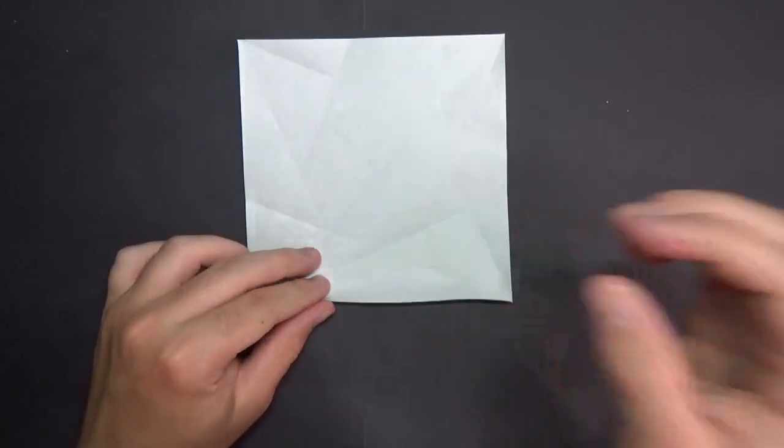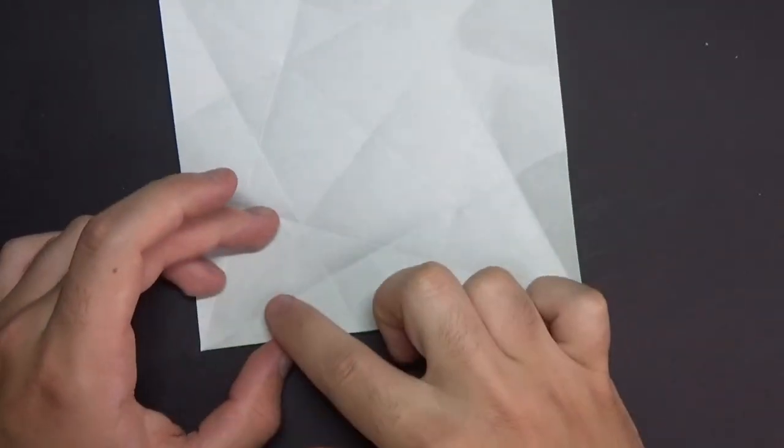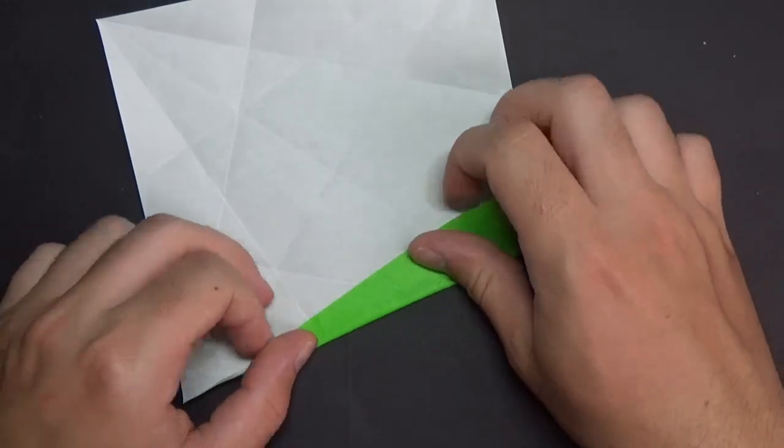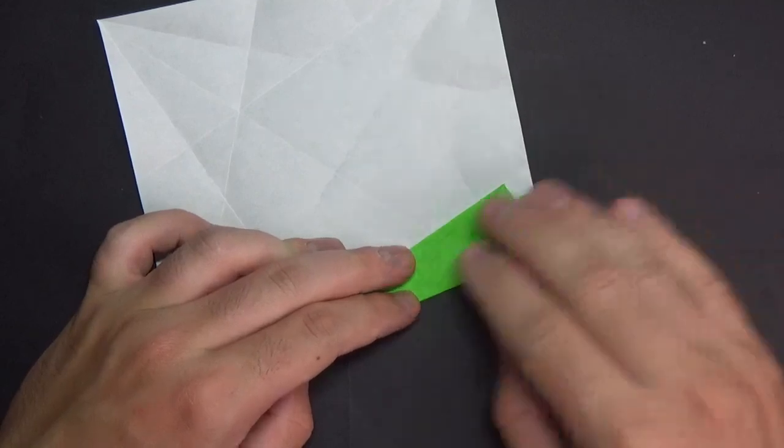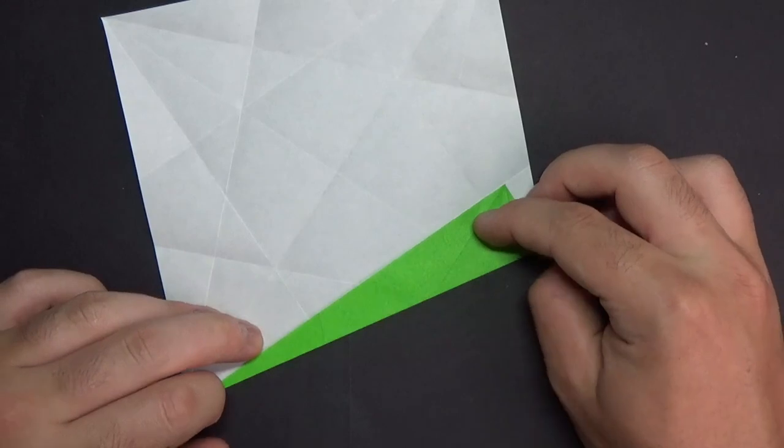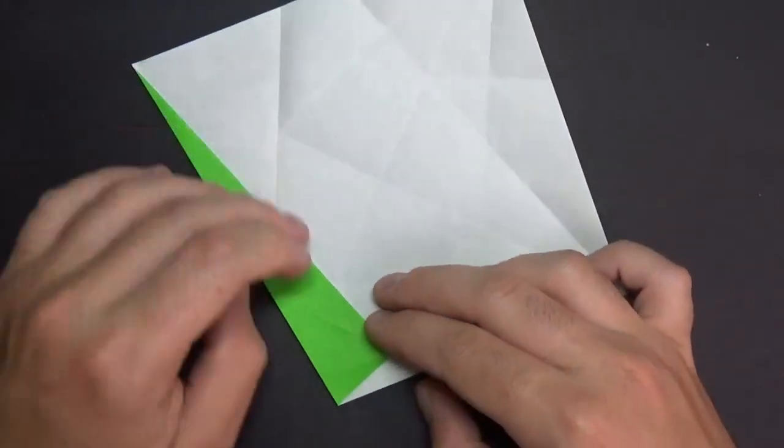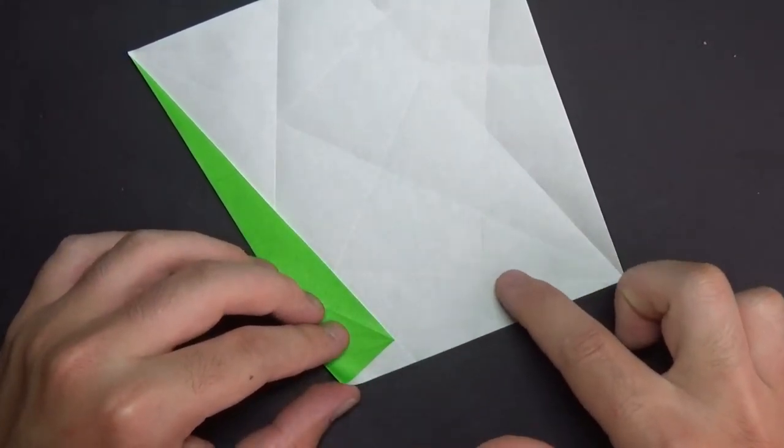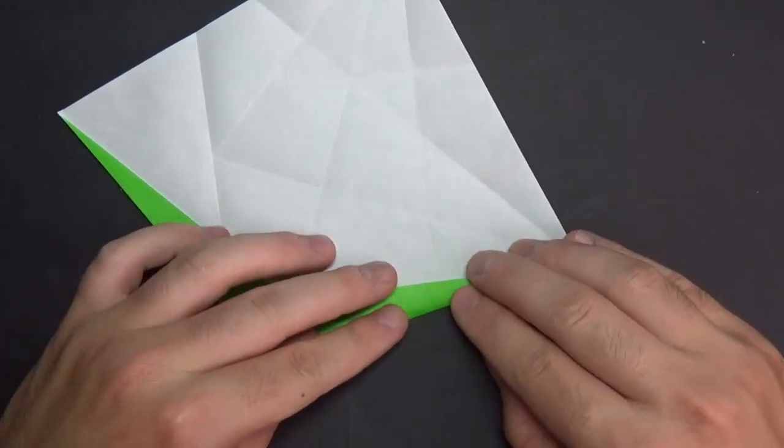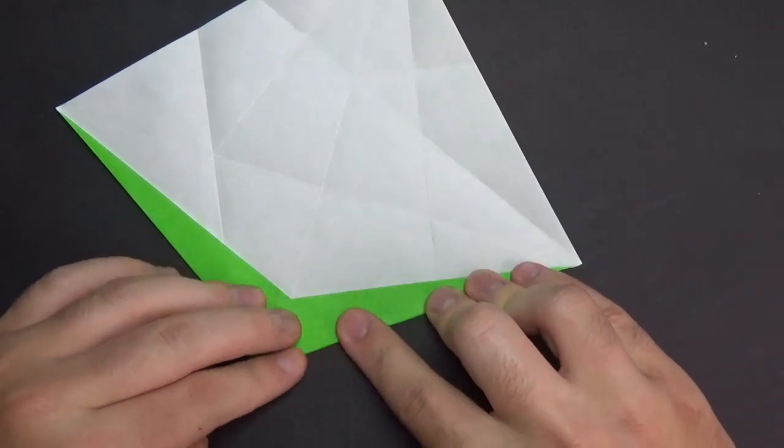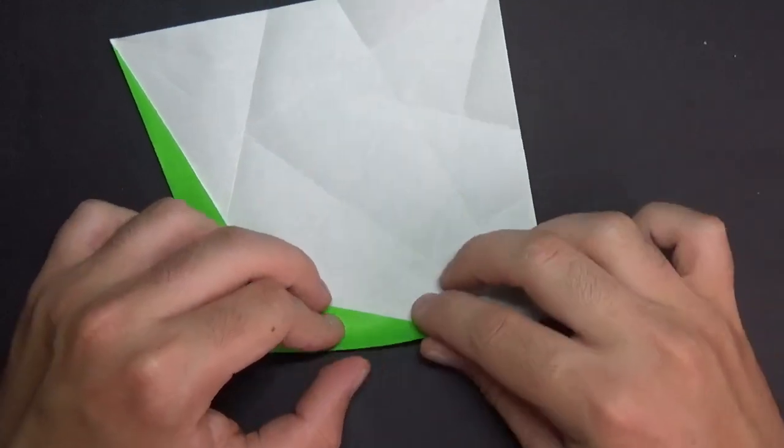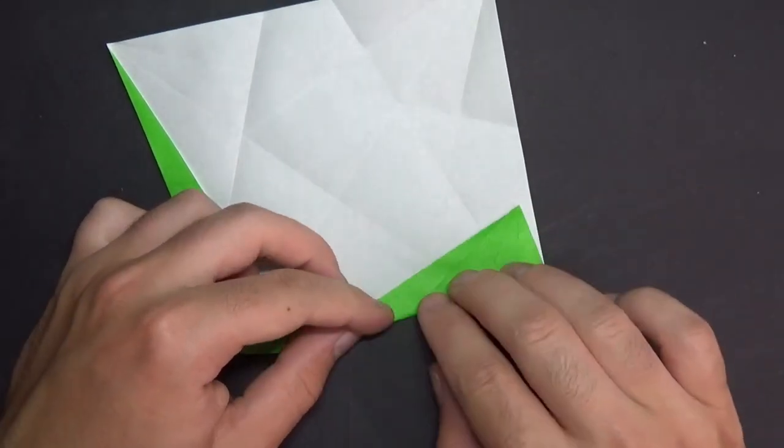Okay, and now we're going to take this edge, and we're going to fold it to this crease. Okay, and keep it folded, rotate, and fold this edge to this crease. Okay, and rotate again, and fold this edge to here. To that crease.